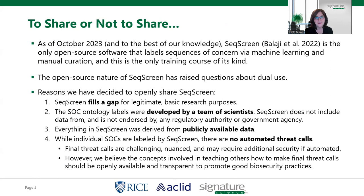That labeling is done through machine learning and manual curation. To our knowledge, our software is the only open source version of a software to do this type of thing, and this is also the only training course of its kind. There's often a hesitation to do that because of concerns about dual use. The reasons we've decided to make our material openly available — including our software, which is installable on Conda, our freely available database, and this training — is that we believe this fills a gap for legitimate basic research purposes.